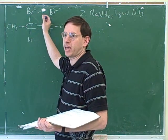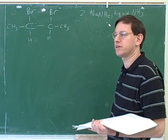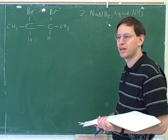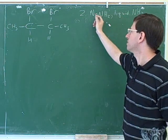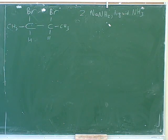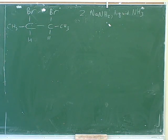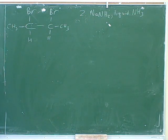Here we have a dihaloalkane — an alkane with two halogens — and we're going to treat it with two equivalents of sodium amide. The liquid ammonia is the solvent; it's a good idea to use a solvent similar to your active reagent so there's no competition. We're not going to just remove a proton here because this is an alkane, not an alkyne, so that wouldn't work. We're going to do a reaction we've already learned about.